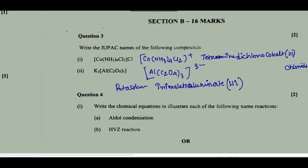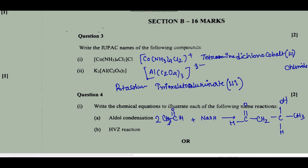Write chemical equations for the following reactions. Aldol reaction: suppose we have an aldehyde with an alpha hydrogen reacting with a base, and another molecule is present — the two molecules get attached, giving the aldol product. After dehydration, a double bond forms, giving an alpha-beta unsaturated ketone. Next, the Hell-Volhard-Zelinsky (HVZ) reaction: an acid compound reacted with bromine and phosphorus substitutes all alpha hydrogens with bromine, giving CH₂Br as one product where one hydrogen is substituted.